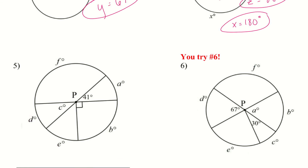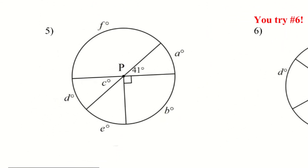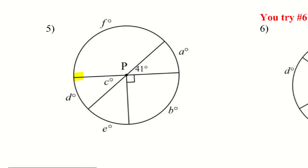Let's take a look at number 5. We have a couple of straight lines to look at. It's important to see where those straight lines are, because wherever they are, we have 180 degrees. Since we have two straight lines, I can label four different 180-degree amounts. The first thing I notice is 41 degrees — so a equals 41 degrees.